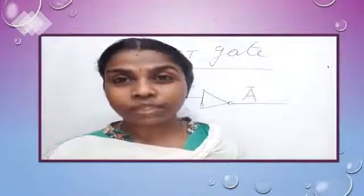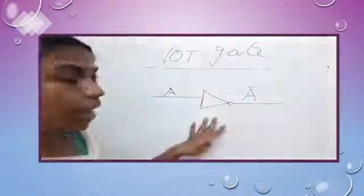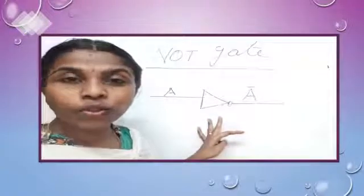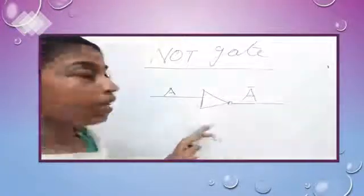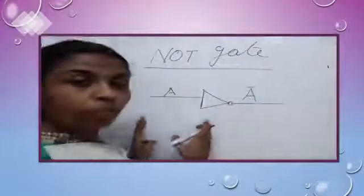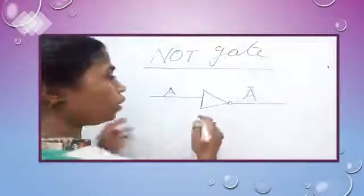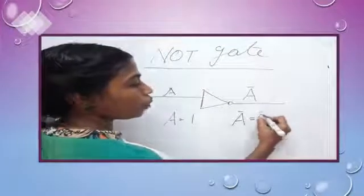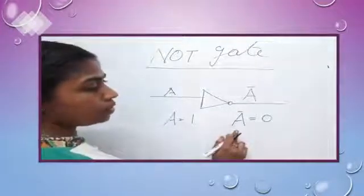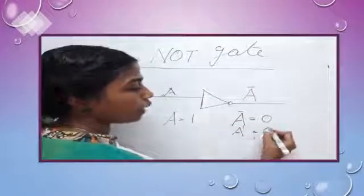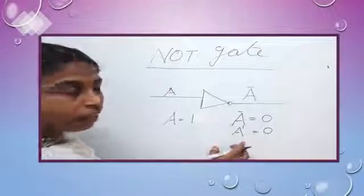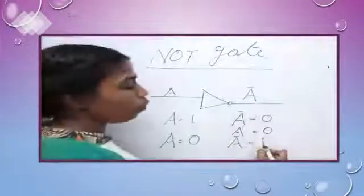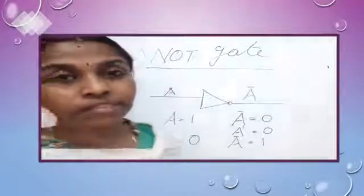Next, I am going to explain about NOT gate. This is the diagram of NOT gate. This NOT gate is also known as the inverter. Do you know the reason? Because it negates the input of the circuit — if we give A as 1, the output is 0. Here, output is represented as A bar or A dash, or we can say A complement. If we give A as 0, the output is 1. So it is known as the inverter.